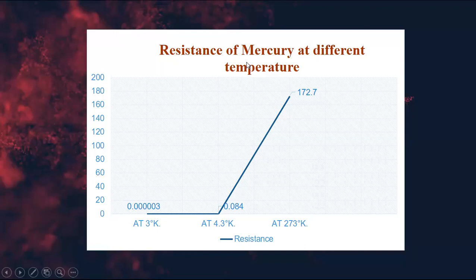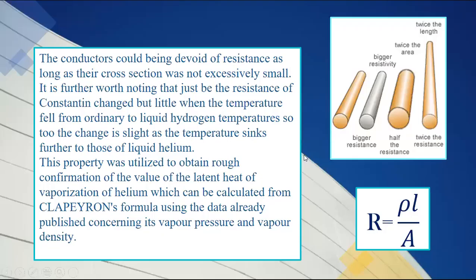This graph perfectly depicts the resistance of mercury at different temperatures. We can all see that as the temperature decreases from 273 to 4.3 Kelvin, the resistance value decreases and becomes zero at 3 Kelvin.